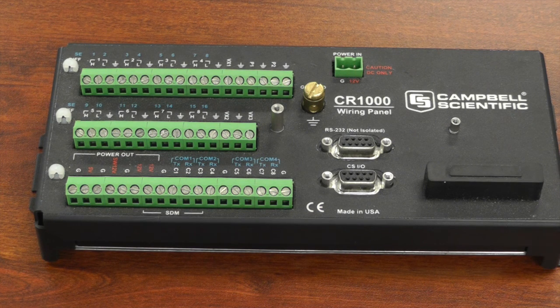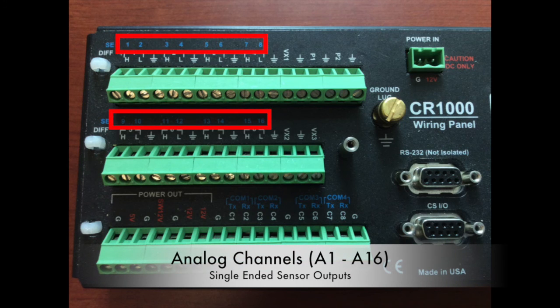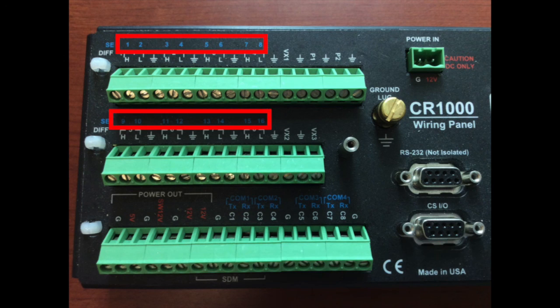The channels can be broken up into a number of categories. First, you have analog outputs. These are channels where sensors only report one thing back. Each analog channel is defined by a blue number, with numbers 1 through 16 — all analog channels.